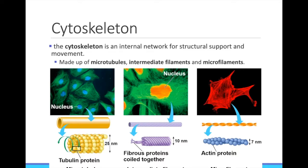The cytoskeleton is made up of different fibers that provide structural support. The largest fibers are called microtubules. They are hollow tubes that make up parts of cilia and flagella, as well as the spindle fibers that form during mitosis. The next smallest are the intermediate filaments — long coiled proteins that give the cell shape. The third and smallest are called microfilaments, also called actin filaments, and they are used in muscle cells. They slide past other filaments to allow your muscles to contract.